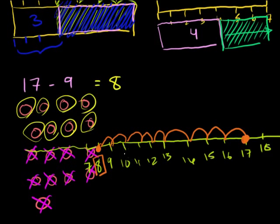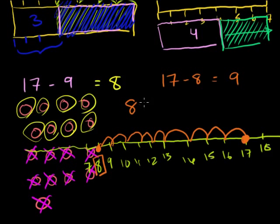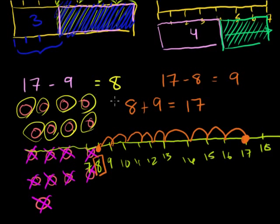This was cleaner and faster. But eventually, you don't want to do this every time. You'll want to internalize that 17 minus 9 is 8. And by the way, 17 minus 8 is 9. Why does this all make sense? Because 8 plus 9 equals 17. So 17 minus 9 is 8, and 17 minus 8 is 9. When I say 17 minus 8, I'm asking: what number added to 8 gives 17? That's 9. When I say 17 minus 9, what number added to 9 gives 17? That's 8.